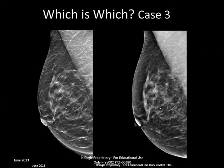Here's one more case. Which do you think is the traditional FFDM 2D and which is the generated 2D? The image on the left is the generated 2D image.